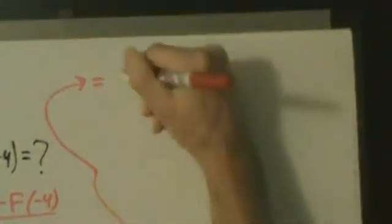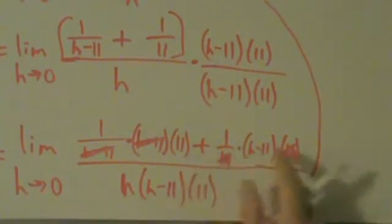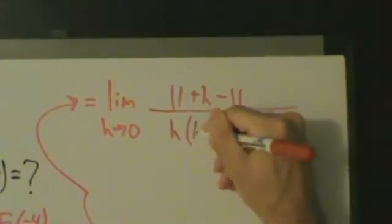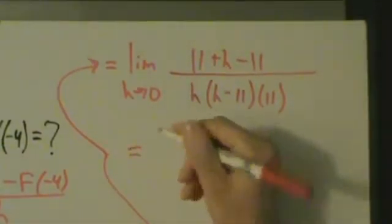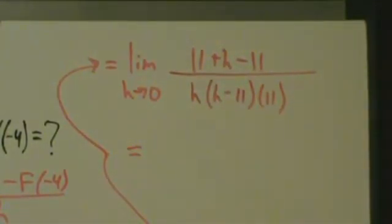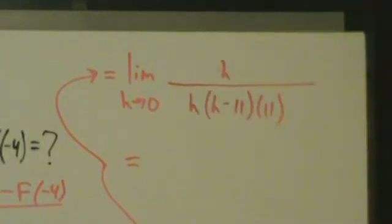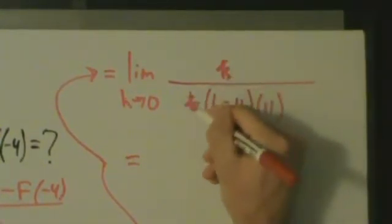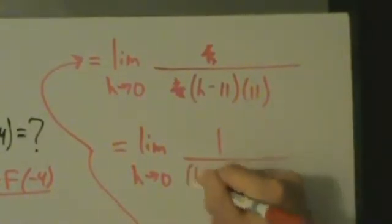When we simplify, we get the limit as h goes to 0 of 11 plus h minus 11, all over h times h minus 11 times 11. The 11 and minus 11 on top cancel, leaving just h on top. That h cancels with the h on the bottom, giving us the limit as h goes to 0 of 1 over h minus 11 times 11.